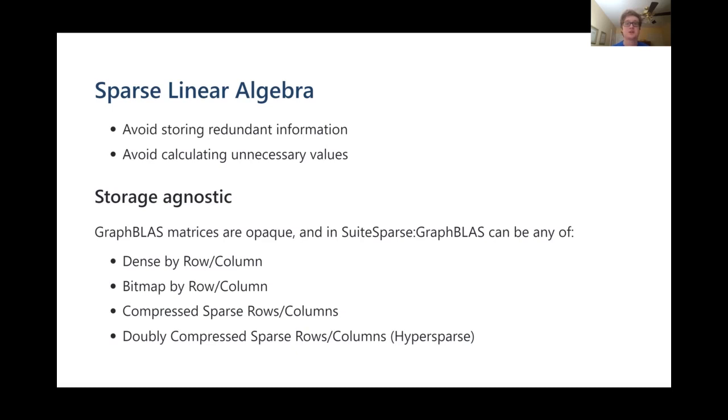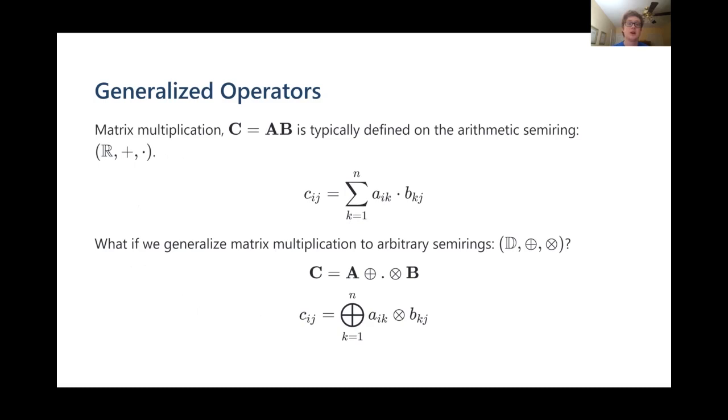The SuiteSparse implementation we're working with employs four different formats in both row and column orientation, and by exposing some degree of control over the format to users, we now have access to several new formats, including the sorely missed CSR format, often requested in GitHub issues.